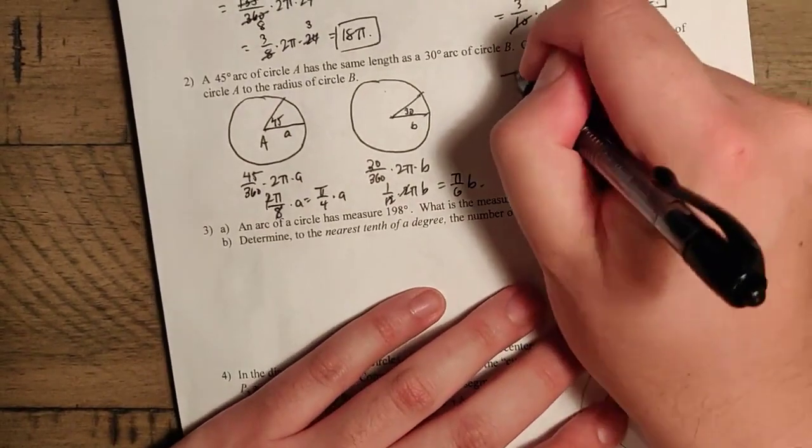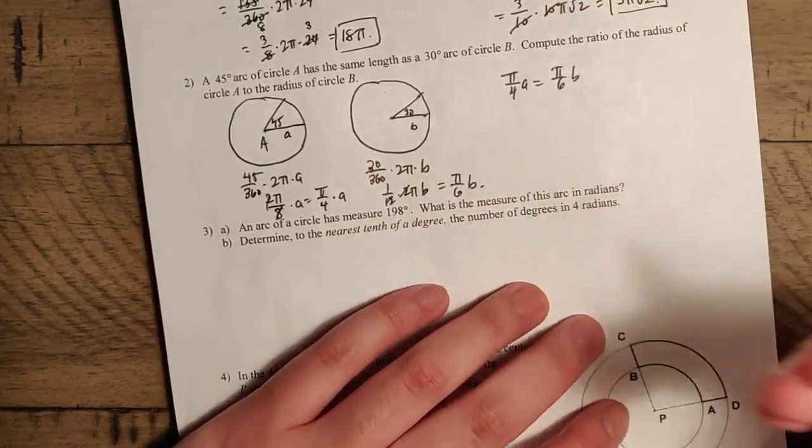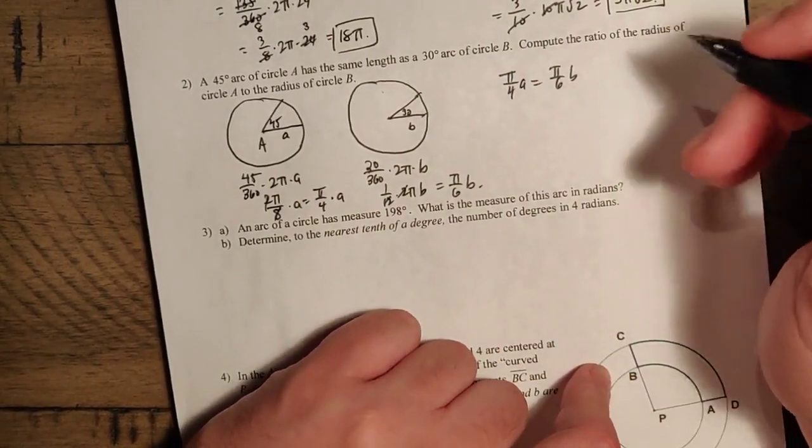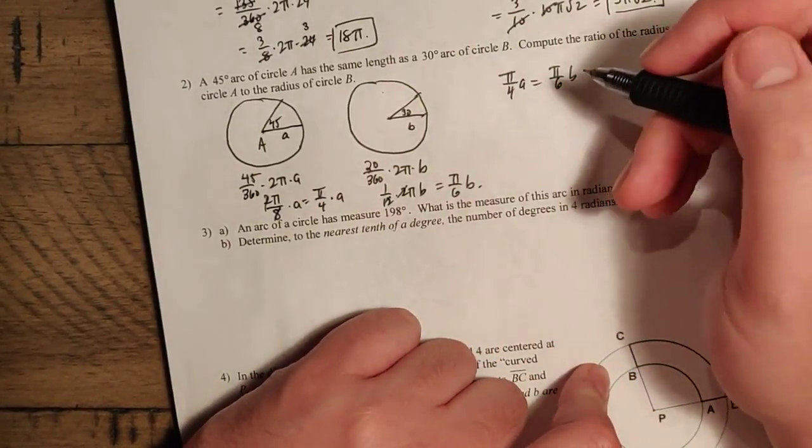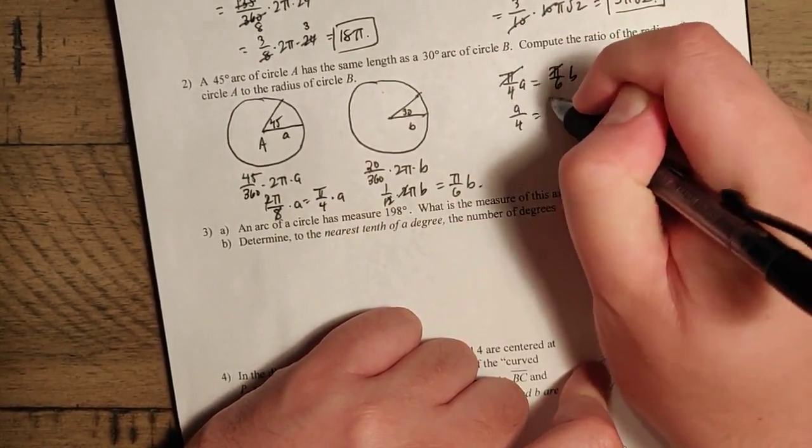Now we're told these are equal. So we can set them equal to each other. Pi over 4 A equals pi over 6 B. And now we want to find the ratio of A to B. So in this situation note that the pi's can cancel out. We're left with A over 4 equals B over 6.